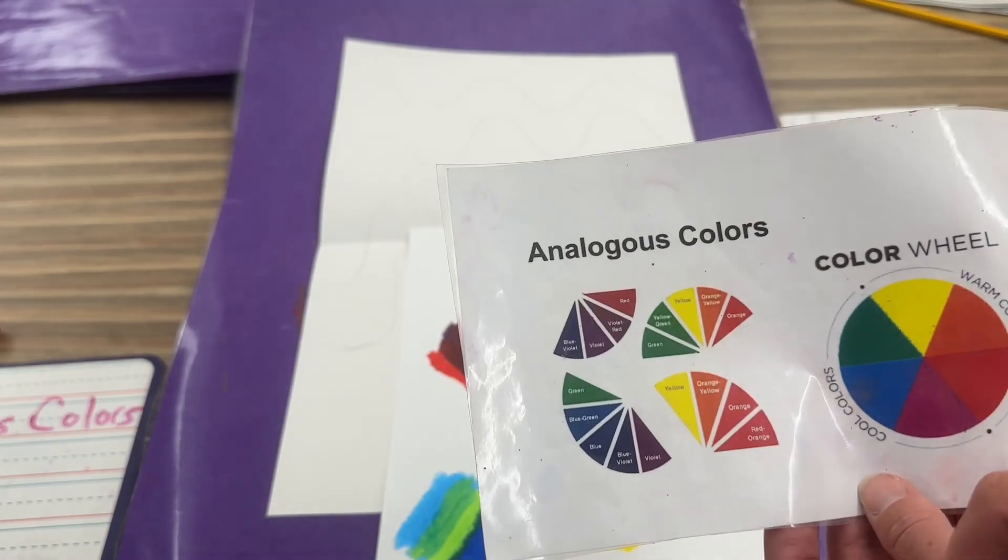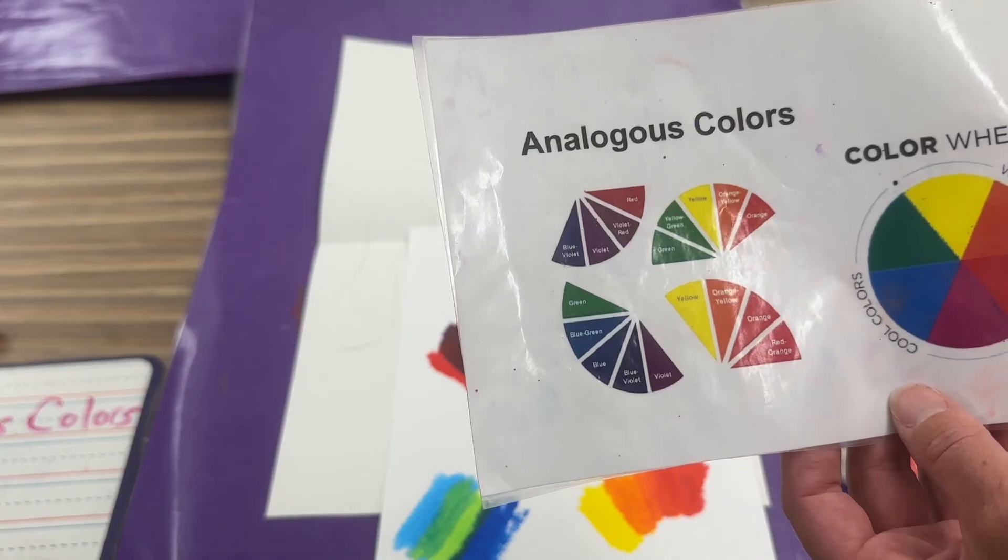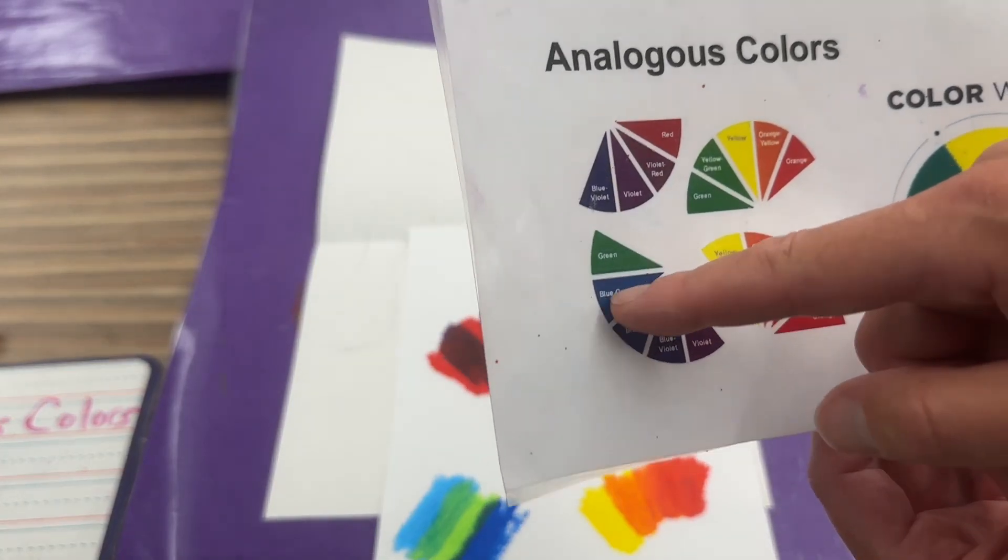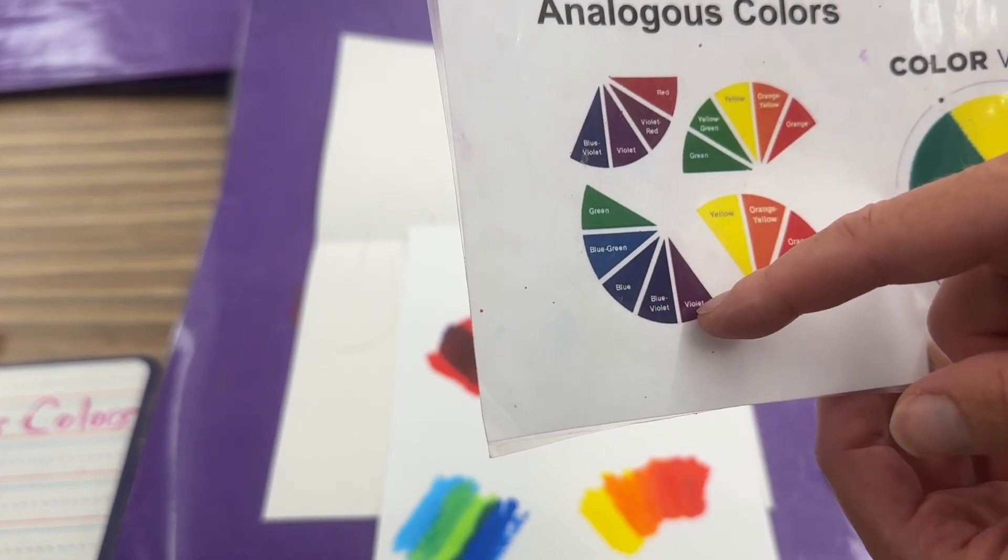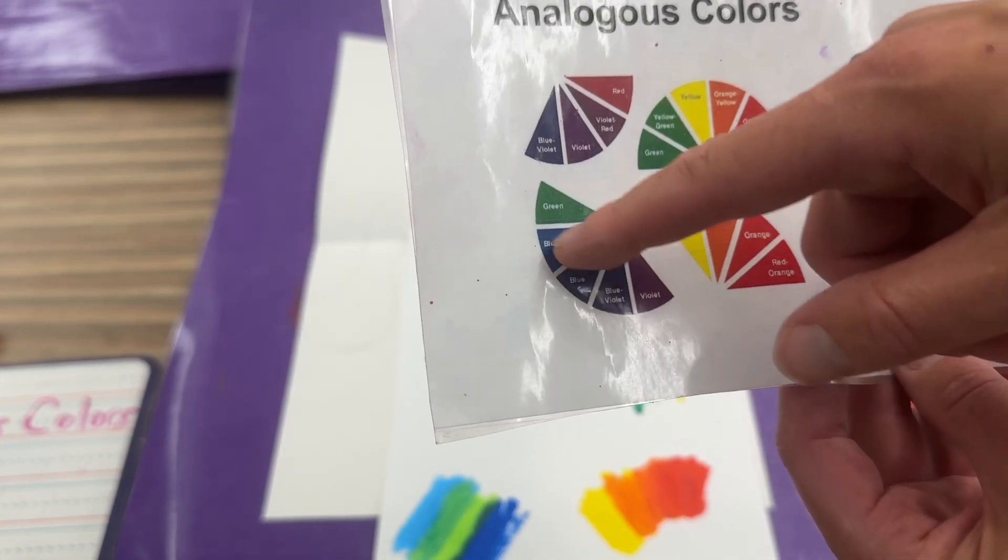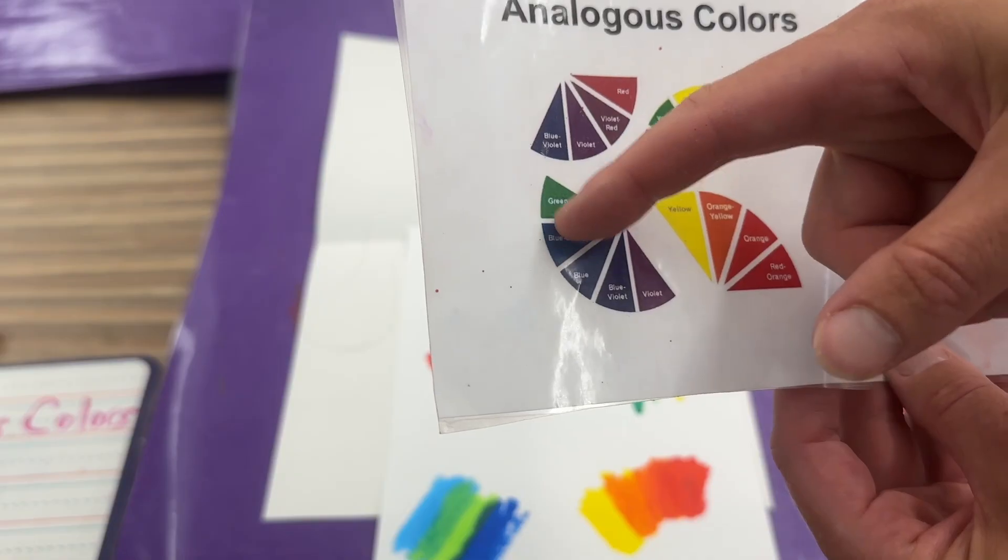Analogous colors are colors that are next to each other on the color wheel. They also have one tertiary color in between. So green, blue-green, blue, blue-violet, violet - you can do a few of those like the first four this way, or the first four this way, three this way, or the first three this way, or you could do all four.